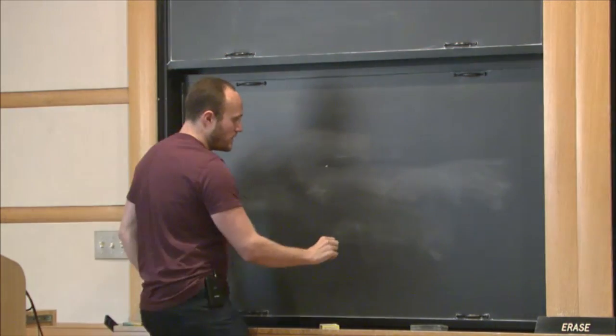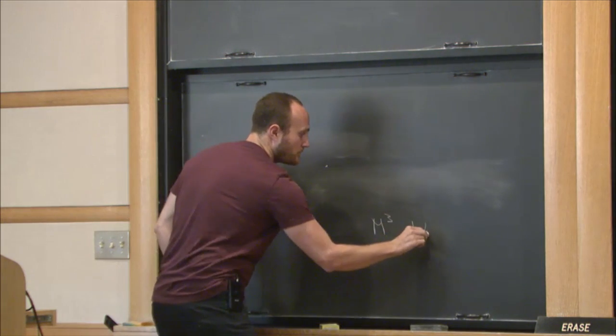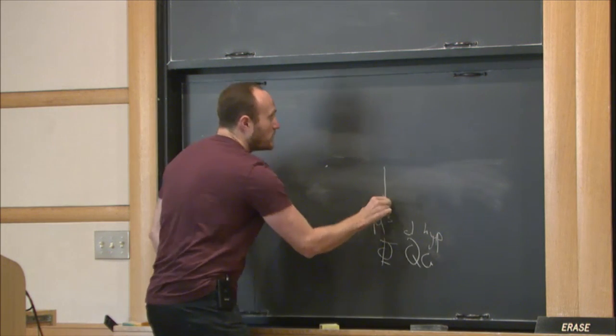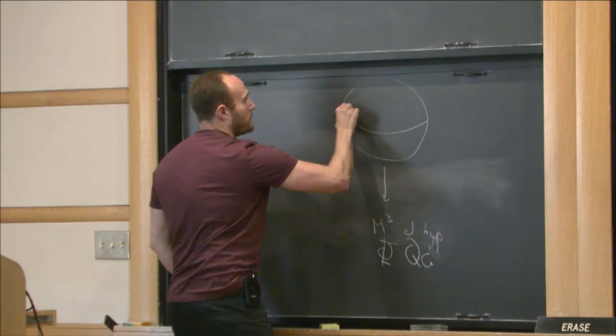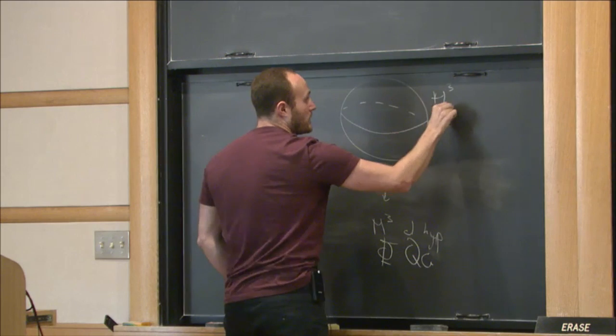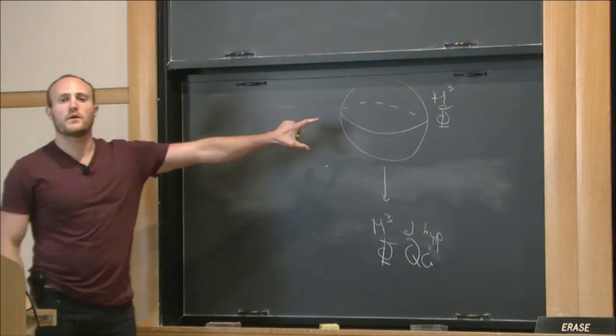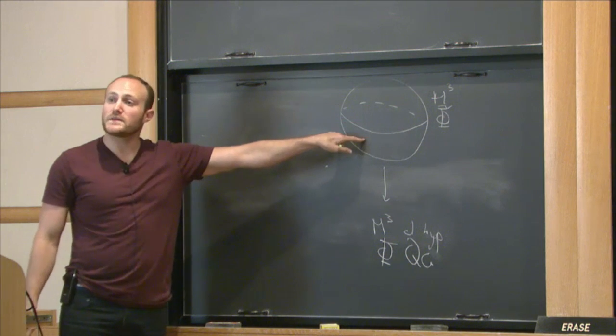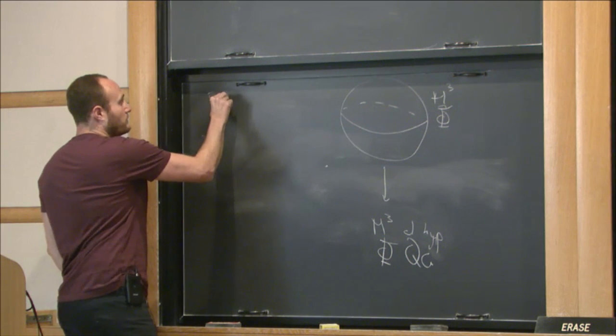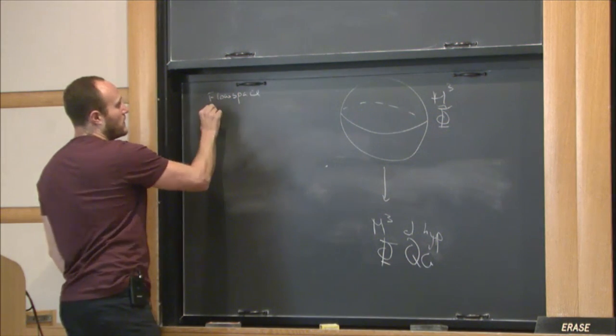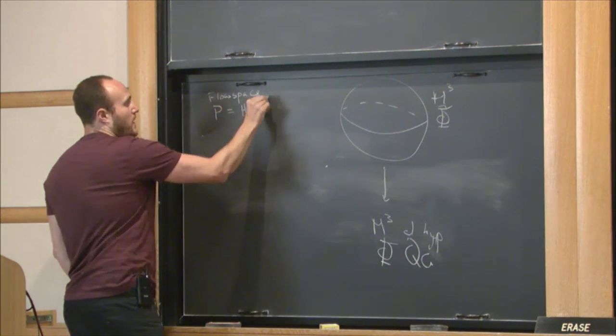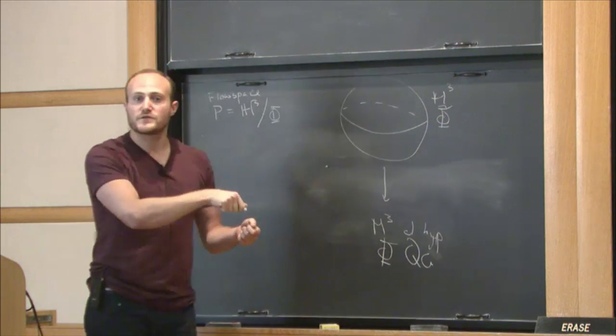All right, so let's start with our closed hyperbolic 3-manifold and our quasi-geodesic flow. And we look at the universal cover. We lift our flow upstairs. And what we'll do is we'll build the flow space of this flow. So what I mean, it's the orbit space of the lifted flow is another way to say it. Another way to say it is just take, we'll call the flow space P, and we'll just take H³, and we'll collapse each flow line in H³ to a point.